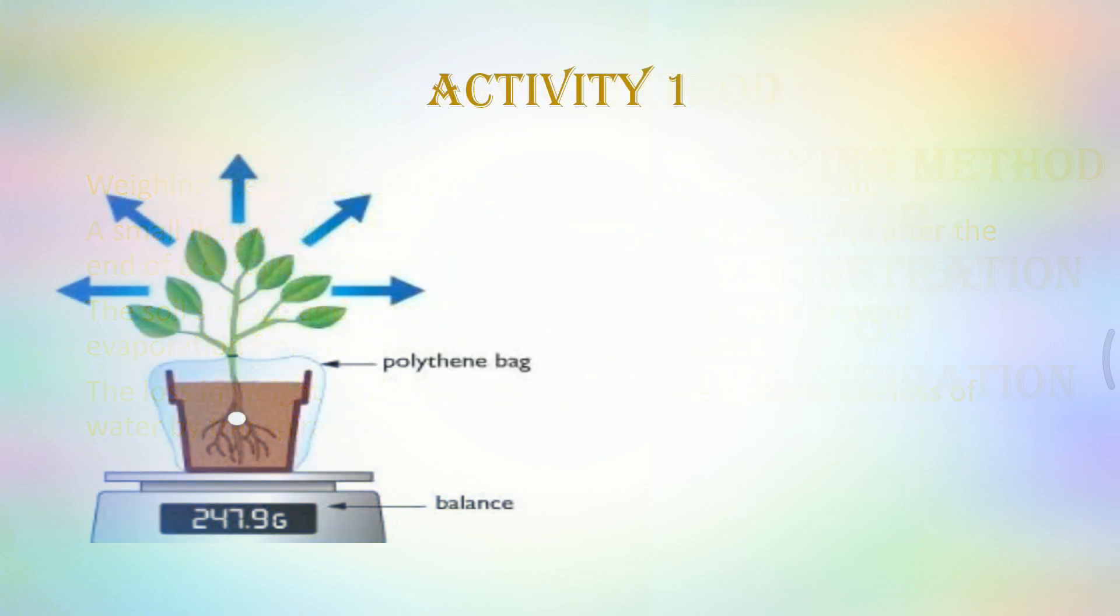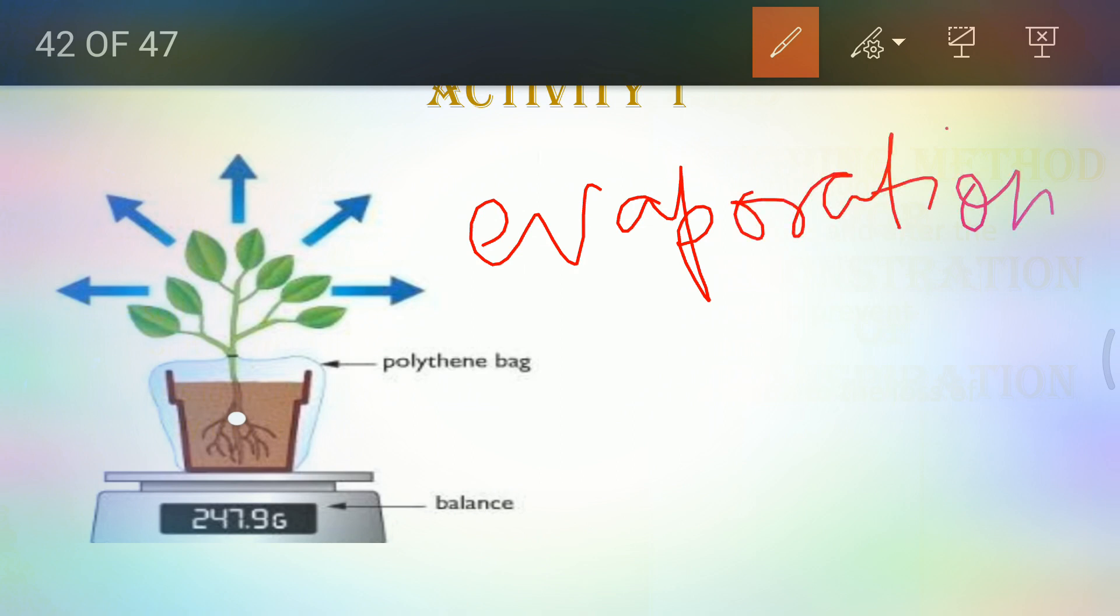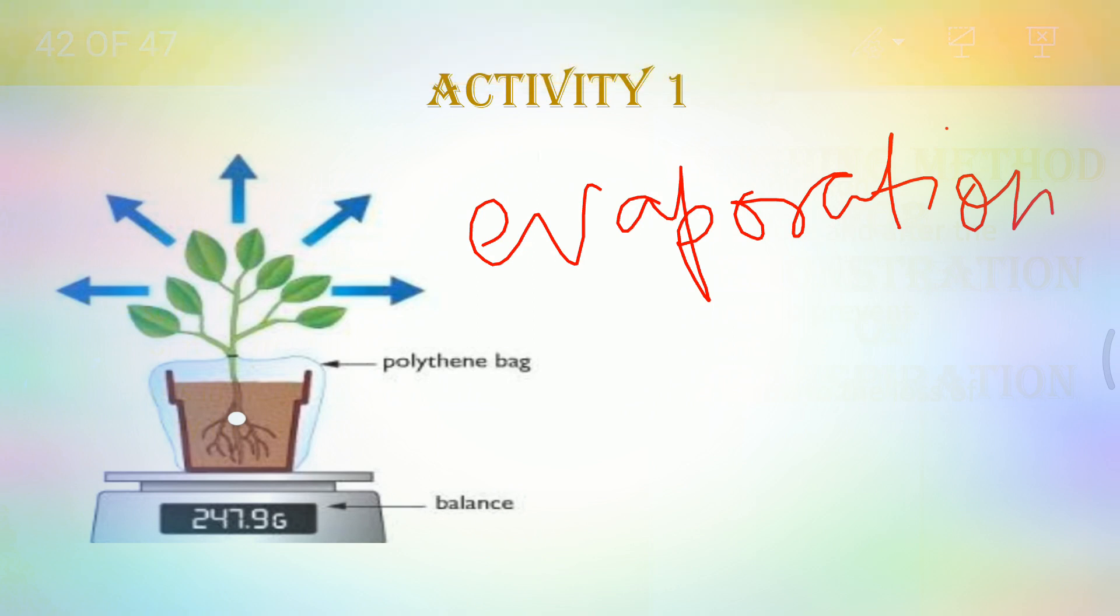Here in the first experimental setup you can see a plant, a potted plant is taken and it is weighed on a weighing machine. But before weighing it, its base is covered with the polythene bag. The reason why the base is covered with the polythene bag is so that the evaporation of water from the soil is to be avoided so that proper reading can be taken.